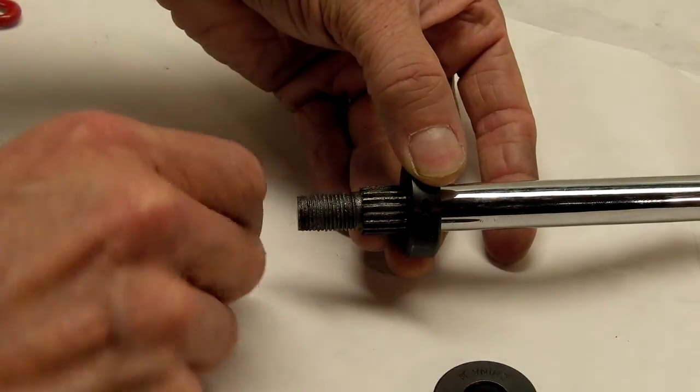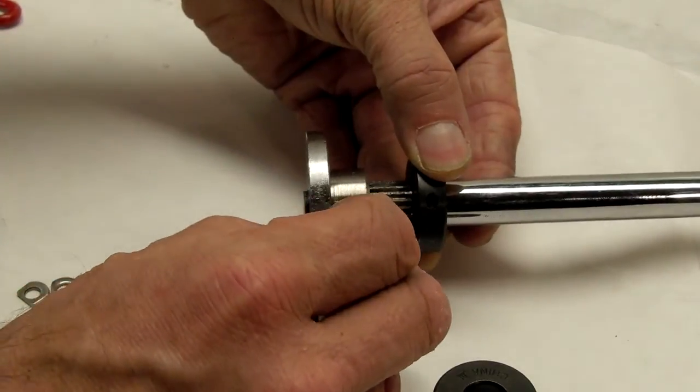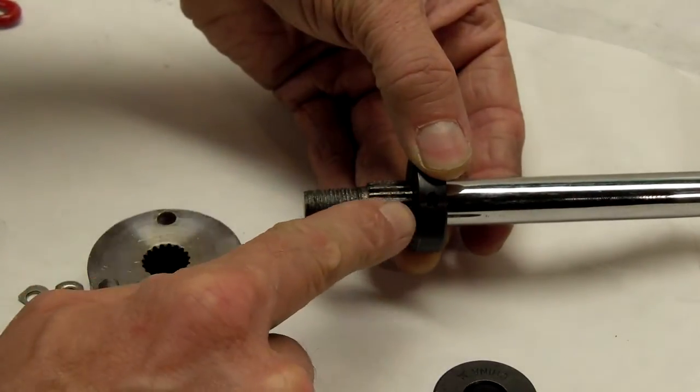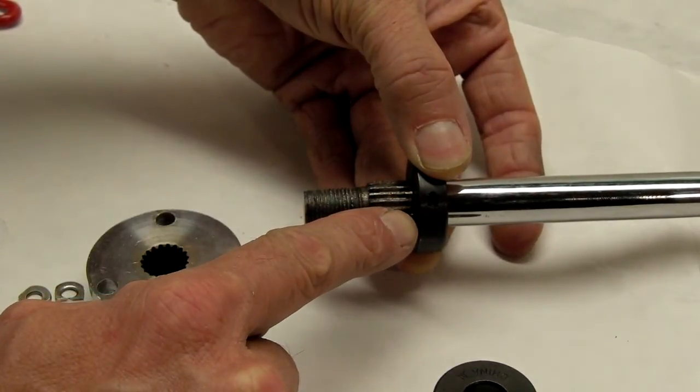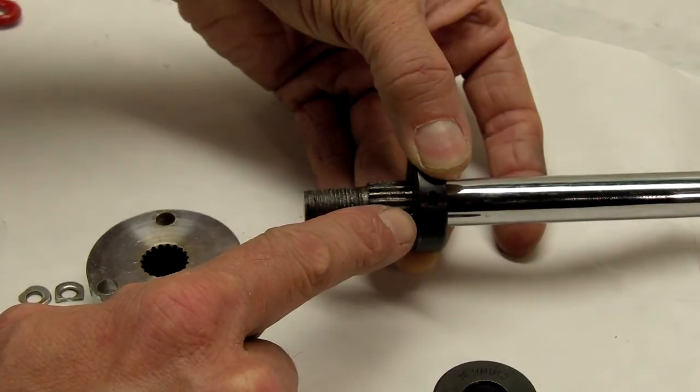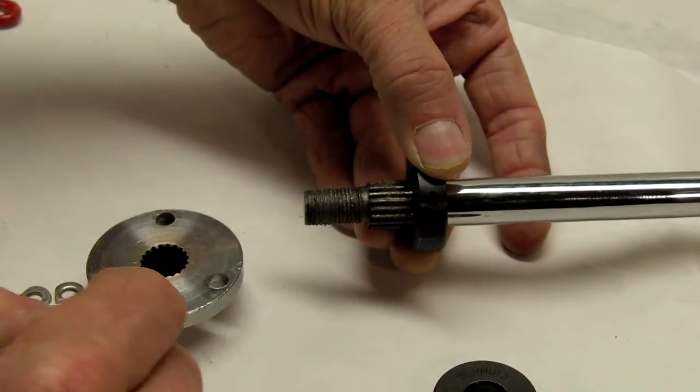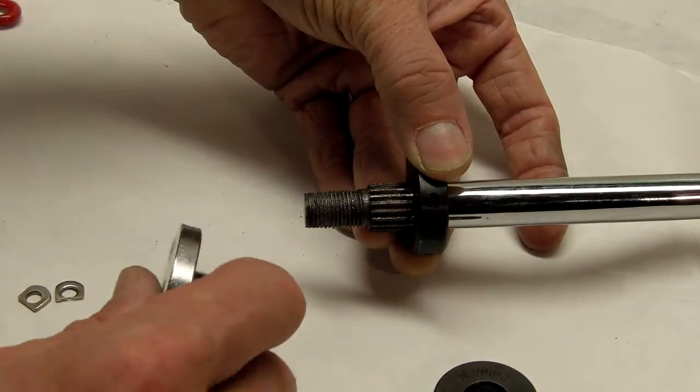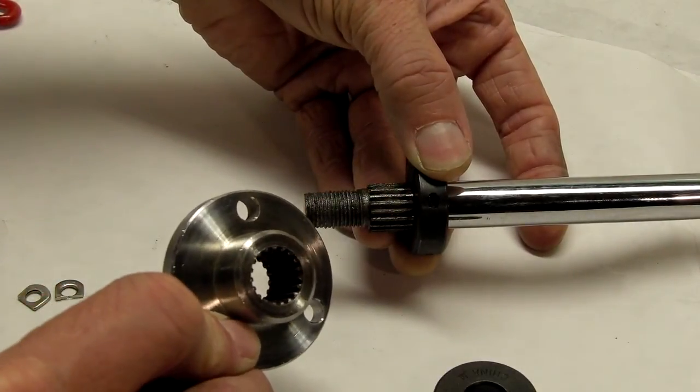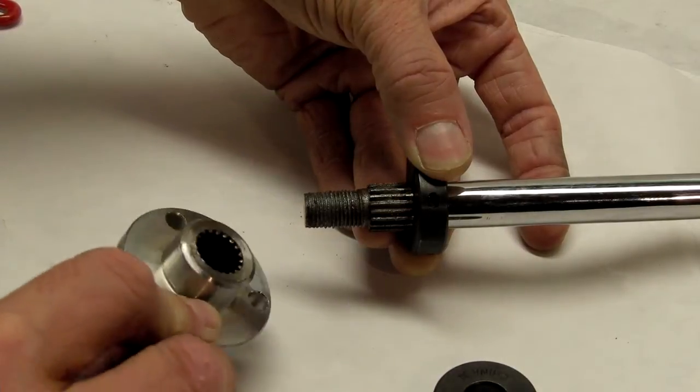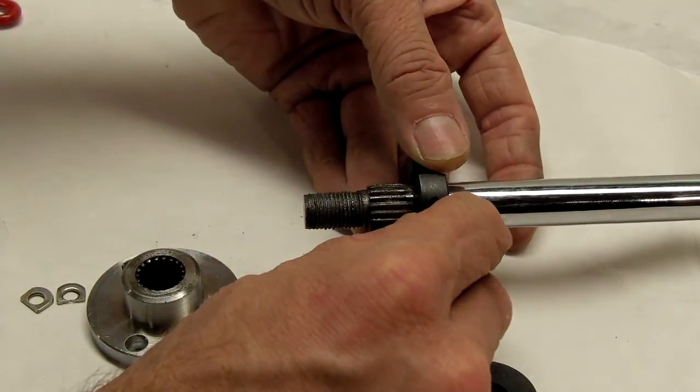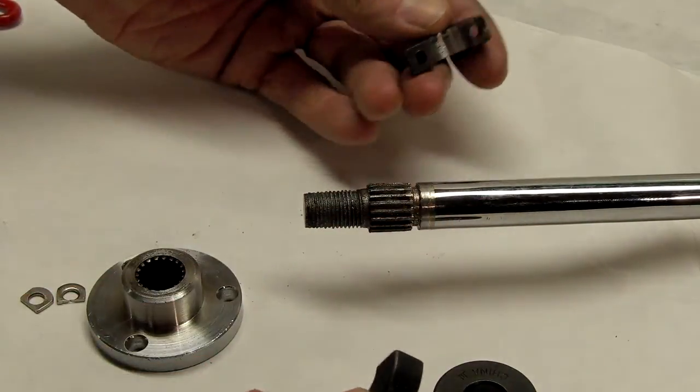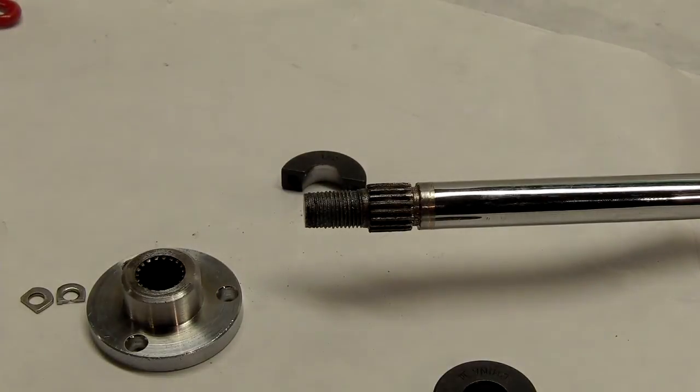Now when you put the hub on, tighten it down, it'll bottom against this clamp and the clamp won't move and everything will stay tight and you won't damage your spline from retightening and shoving the hub spline into the shoulder on the shaft. Give that a try and see if that works for you.